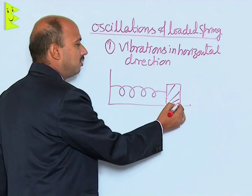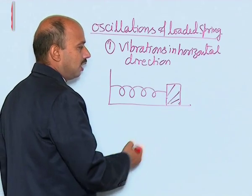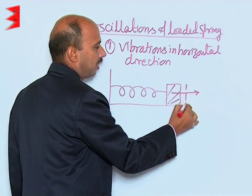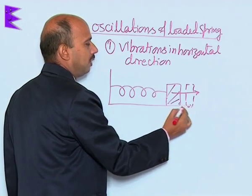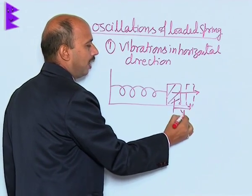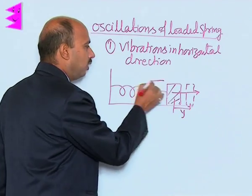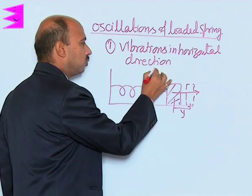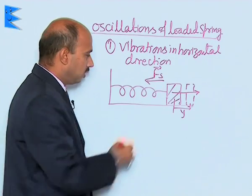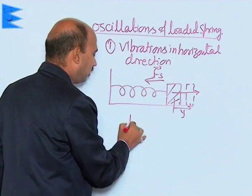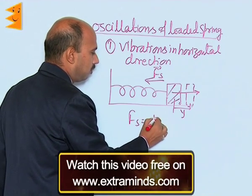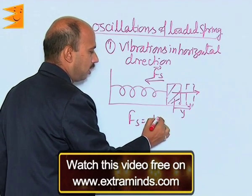When the mass is attached and this mass is displaced to this side by a small displacement, suppose y, then the restoring force acts to this side — that is also called spring force. This is F equals F_s equals minus k y.